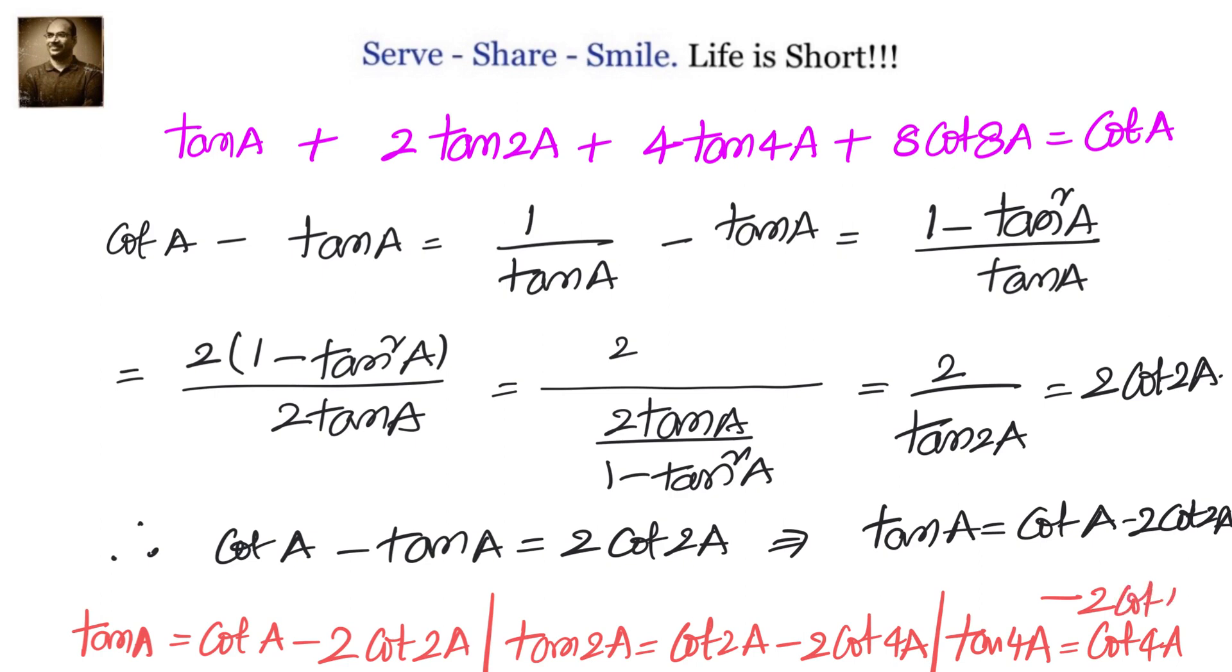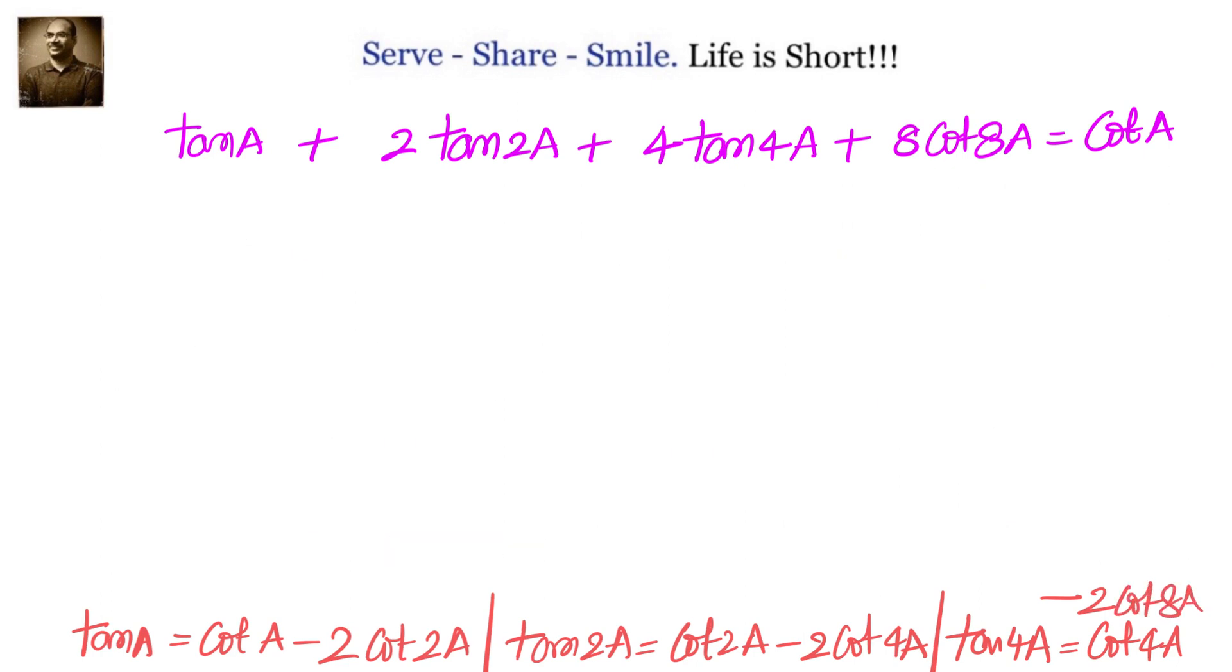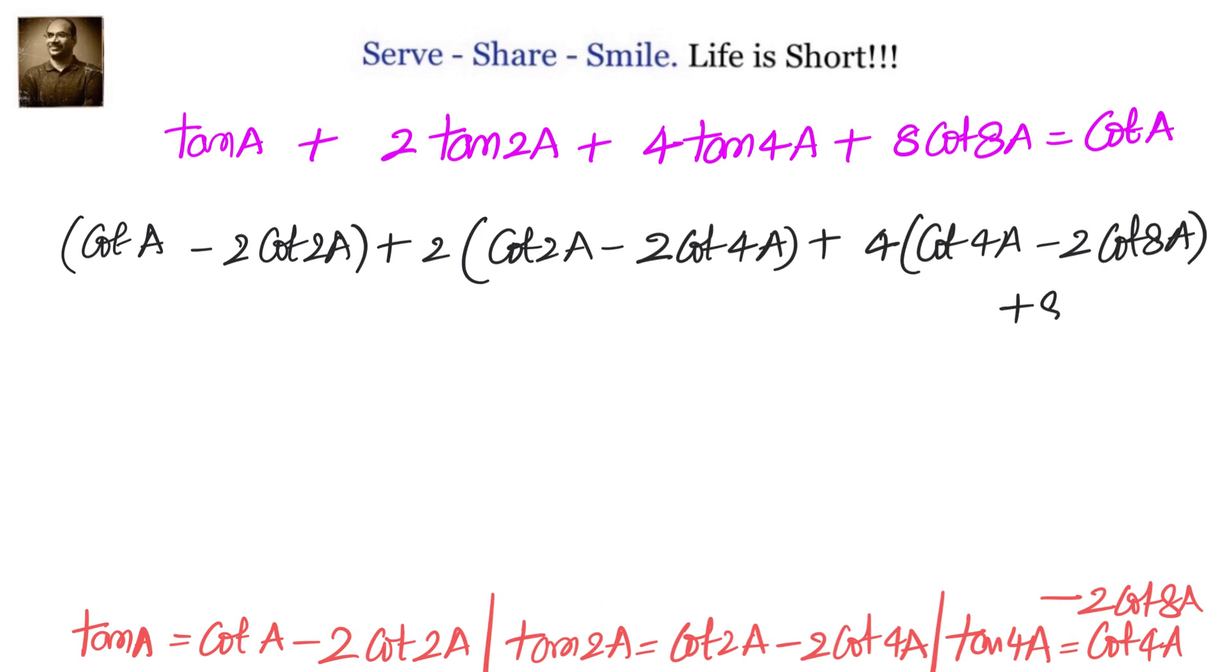If you understood that we just go and substitute in the LHS we'll get the answer, then you're perfectly right. Let's go ahead and do that. So in place of tan a let's write down cot a minus 2 cot 2a, and in place of tan 2a let's write down cot 2a minus 2 cot 4a. And in place of tan 4a let's write down cot 4a minus 2 cot 8a. When we substitute that and open the brackets, we see that everything will cancel other than cot a.